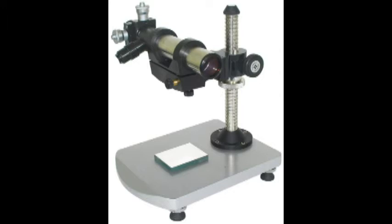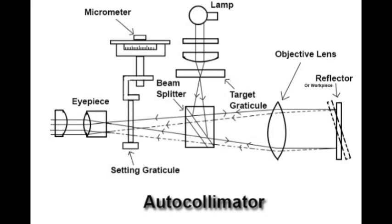The working principle of the auto collimator is as follows. When a beam of light rays coming out of a monochromatic light source falls on a diverging lens and is made parallel — to make the light rays parallel, the light source should be kept at the focus of the diverging lens. After that, if these parallel rays fall on a reflecting surface, the rays reflect back along the same path but in the opposite direction, and converge at the light source by passing through the converging lens.